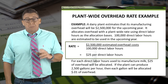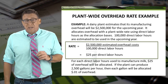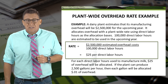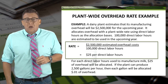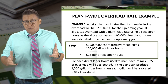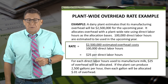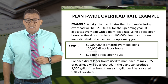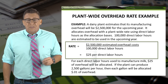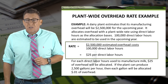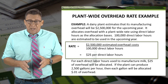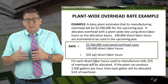It allocates overhead with a plant-wide rate using direct labor hours as the allocation basis. 100,000 direct labor hours are estimated to be used in the upcoming year. So we divide the cost of $2.5 million by the 100,000 direct labor hours.